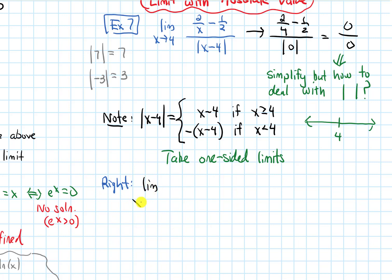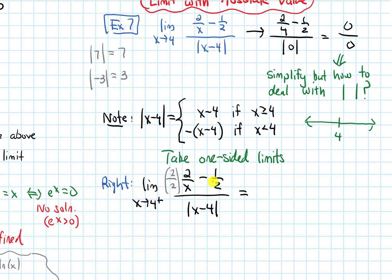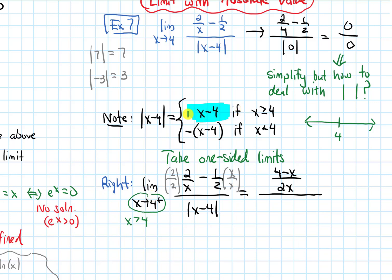From the right, we take the limit as x approaches 4 of 2 over x minus 1 half, over the absolute value of x minus 4. On the numerator, I have a fraction minus a fraction, so I'll get a common denominator by multiplying the first by 2 over 2 and the second by x over x, giving me 4 minus x over 2x. Because x is approaching 4 from the right, x is greater than 4, so the absolute value of x minus 4 in the denominator just becomes x minus 4.